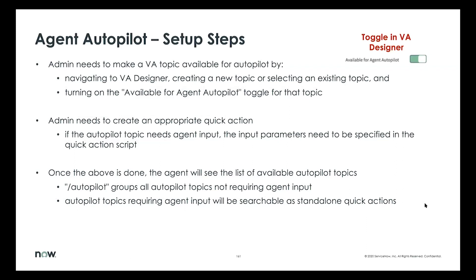In terms of setup, first you need a relevant VA topic that can be invoked by the agent. The way you do that is you go into VA Designer as an admin or a topic author and create specific topics — for example, a troubleshooting topic with text boxes asking the user for contact information and so on. Once that topic is set up, there is a toggle within VA Designer which, once you switch it on, causes it to show up for the agent to be used as part of the Autopilot experience.